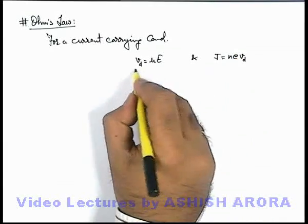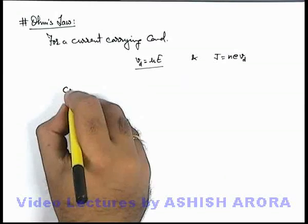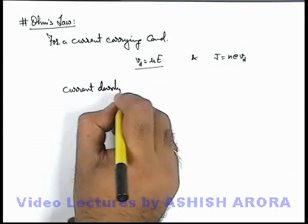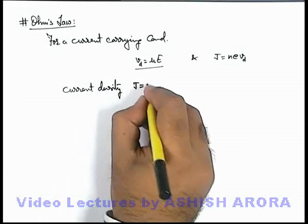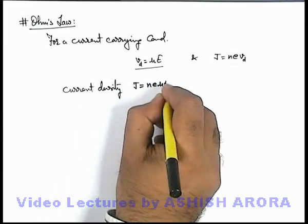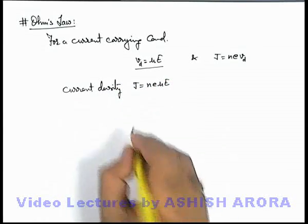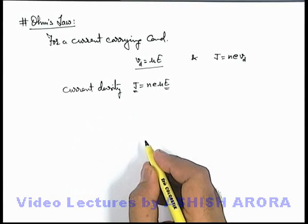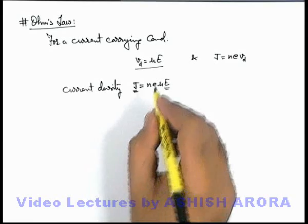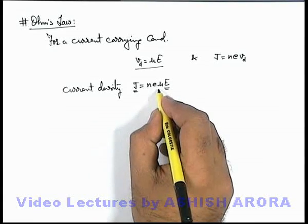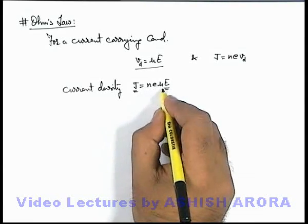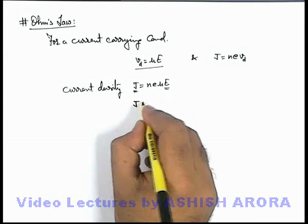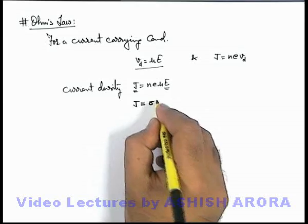If we substitute the drift velocity, we can see that in a conductor current density can be given as J = nEμE. Here we can see that current density is directly proportional to the electric field applied in the conductor. And nE and μ are parameters which depend on lattice as well as on temperature, so these can be clubbed in the form of a single constant that can be written as σE.